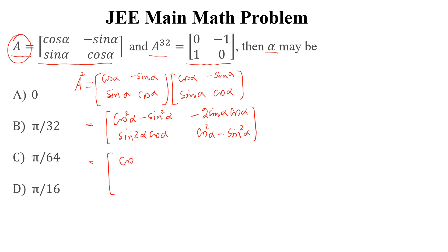This equals cos2α, minus sin2α, and here cos2α. So this is A squared.